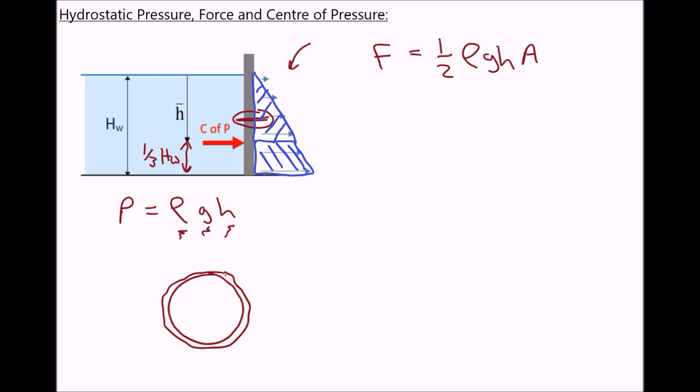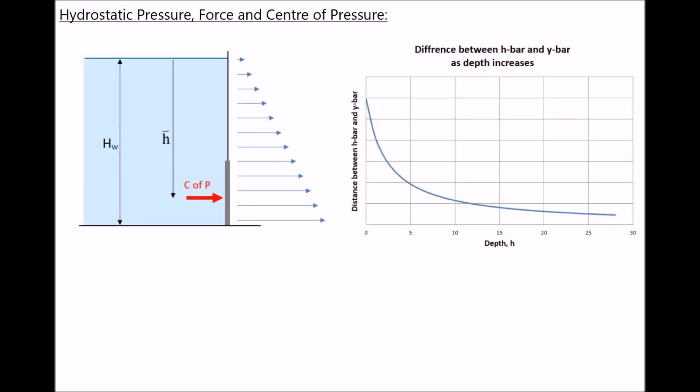Let's see how things change when the surface is fully submerged. The diagram on the left hand side gives us an example of when our submerged surface is fully below the surface of the water. We still have the height of the water h subscript w, and we still have the distance to our centre of pressure h bar. What we notice in this scenario is that our centre of pressure is actually much closer to the centroid of the surface.